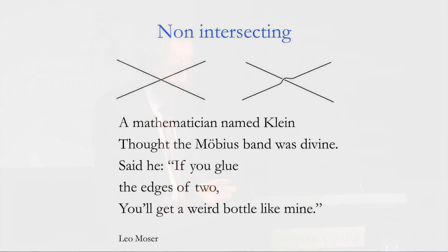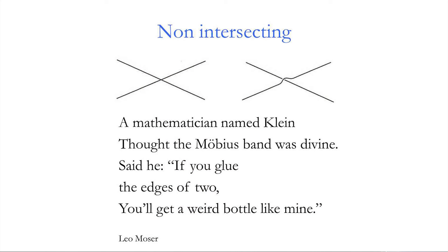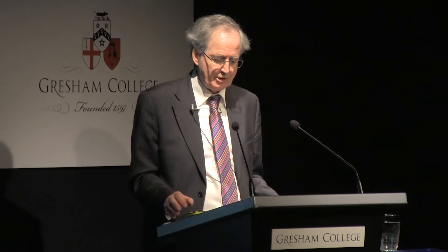As a limerick puts it: 'A mathematician named Klein thought the Möbius band was divine. Said he, if you glue the edges of two, you'll get a weird bottle like mine.' In other words, the Klein bottle can be constructed by taking two Möbius bands, each with a boundary, and gluing those boundaries together — though it can't be represented in three-dimensional space; you need to go up another dimension.